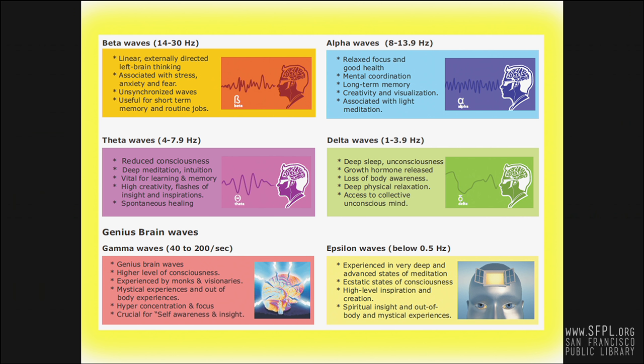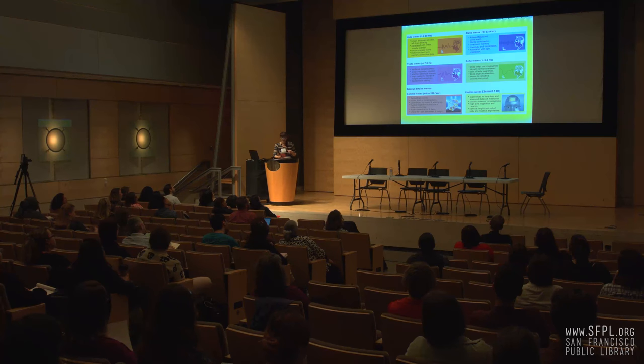Alpha waves, associated with frequency levels of 8 to 14 hertz, are the type of brainwave our brains produce when we become relaxed. Generally speaking, alpha waves are produced when we're very calm but still aware of what's going on around us. They can be associated with unwinding in a stress-free environment, after work, light meditating, or engaging in other forms of quiet contemplation.